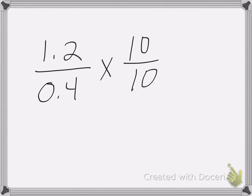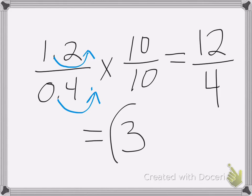So let's multiply it first. 1.2 times 10, we move that decimal place one place to the right. So I get 12 over 0.4 times 10. I move it one decimal place to the right. 12 divided by 4. And 12 divided by 4 is equal to 3.